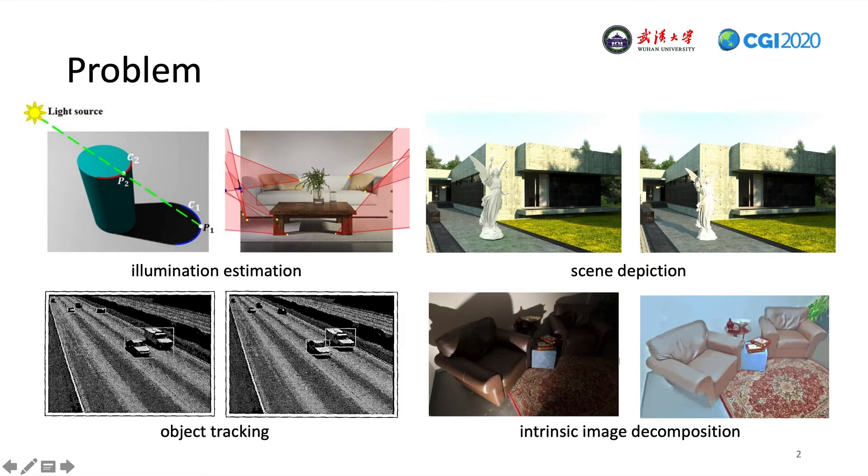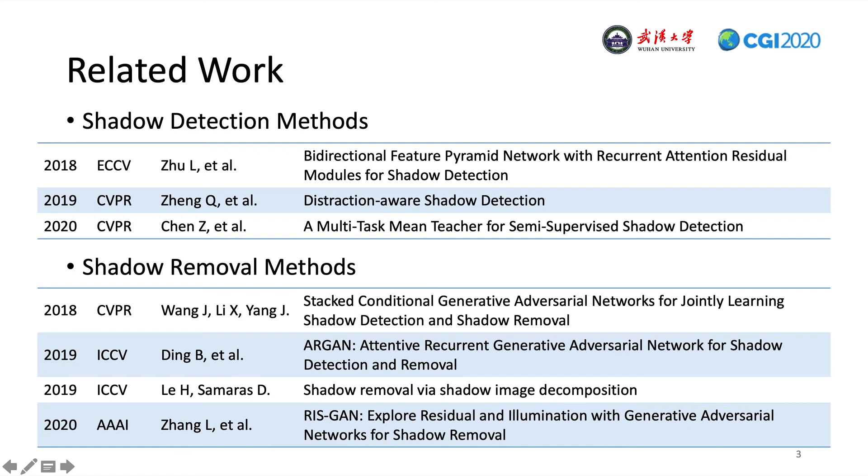As a fundamental problem in computer vision, shadow detection and removal have been widely studied in recent years. Deep learning-based methods have become very popular due to the success of deep learning in computer vision tasks.